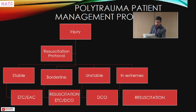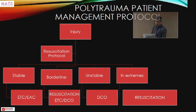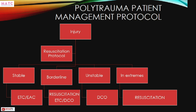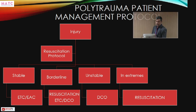After injury and resuscitation — which was discussed by our earlier speakers — a stable patient meeting those parameters goes for Early Total Care or Early Appropriate Care. A borderline patient is resuscitated, shifted to the stable category, and then planned for Early Total Care or Early Appropriate Care. If the borderline patient remains unstable, Damage Control Orthopedics is planned.